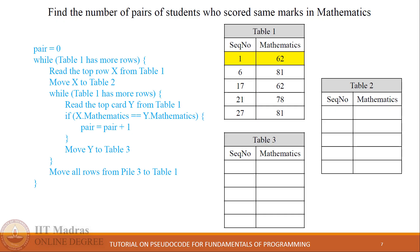The next concept is nested iterations, which refers to the process where one iterator runs inside another iterator. Consider this example: find the number of pairs of students who scored the same marks in mathematics. For demonstration, consider a table consisting of marks of 6 students. As per the pseudocode, we iterate over the table, and variable X will hold the highlighted row.